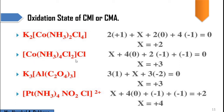In the next example, we calculate: X plus 4 × 0 (for the neutral ligand) plus 2 × (−1) for Cl plus (−1) equals 0. So 4 × 0 = 0, 2 × (−1) = −2, and (−1) gives −3 total. So X − 3 = 0, and X = +3. The oxidation state of cobalt in this complex is +3.